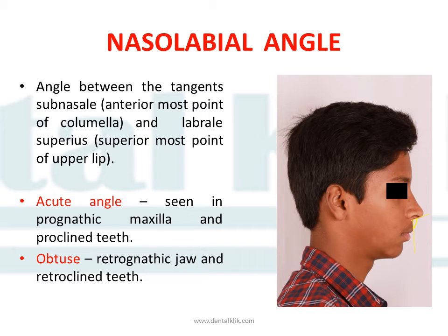The nasolabial angle is the angle between two tangents: one at subnasal (the anterior-most point of the columella) and one at labrale superius (the superior-most point of the upper lip). This angle can be acute, which is usually seen in a prognathic maxilla or with proclined teeth, or obtuse, which is seen in retrognathic jaws or retroclined teeth. The normal range for the nasolabial angle is 90 to 120 degrees.